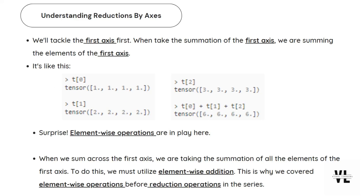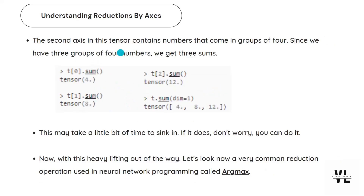So basically, the summation operation along the first axis where dim is equal to 1 is just adding the elements across the rows in corresponding positions. The second axis in this tensor contains groups of 4. Since we have 3 groups of 4 numbers, we get 3 sums. So t[0].sum means taking the sum of the first row and we get 4. We do the same for the second and third rows, getting 4, 8, and 12. Basically, if you take the sum of the original tensor and pass dim equal to 1 as a parameter, it's taking the sum of each row and giving you the output.